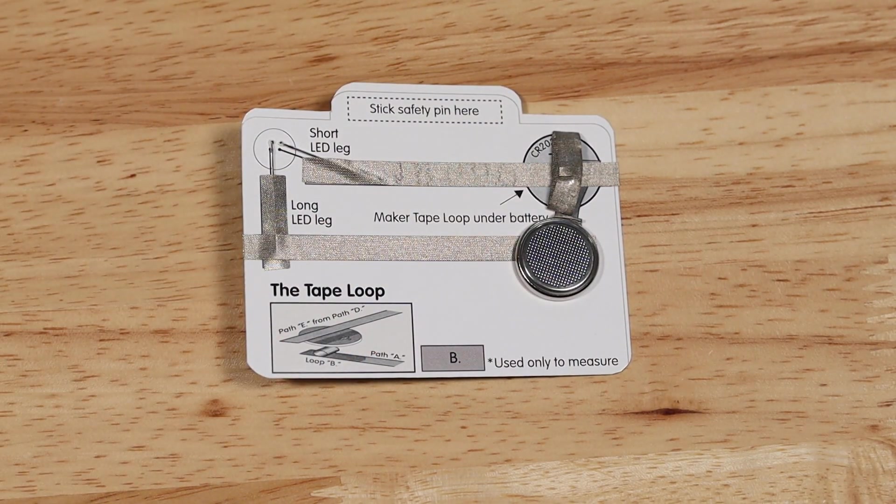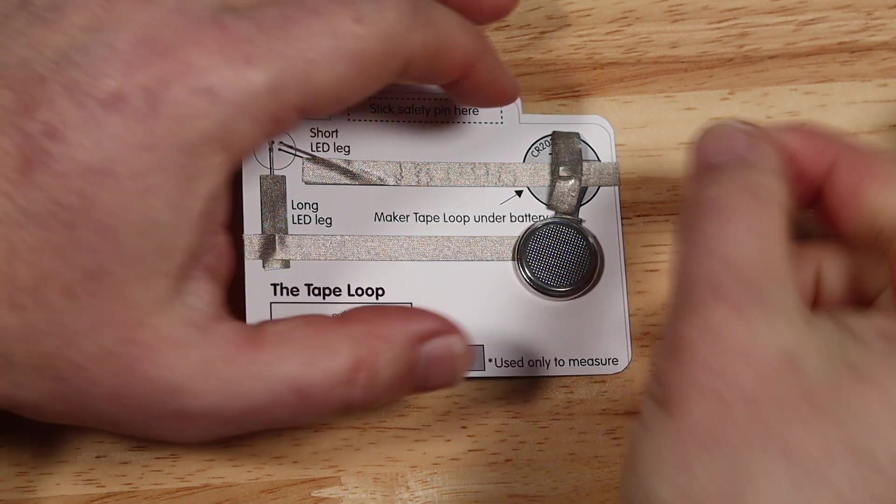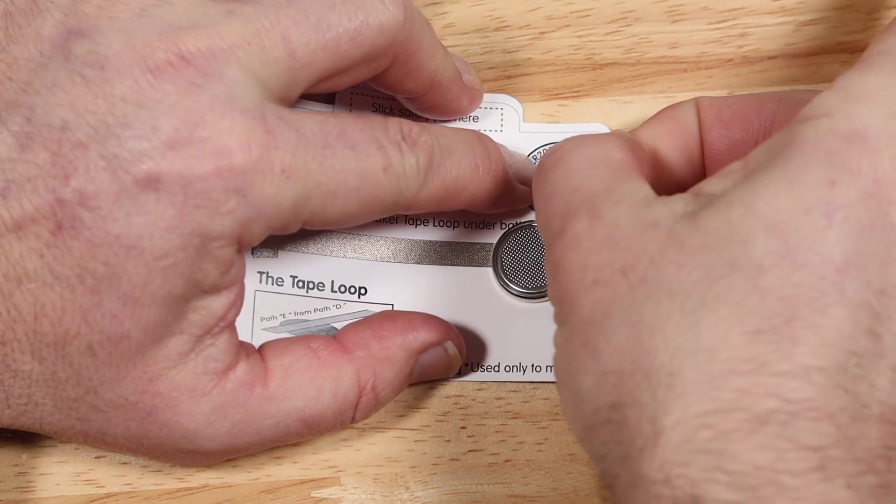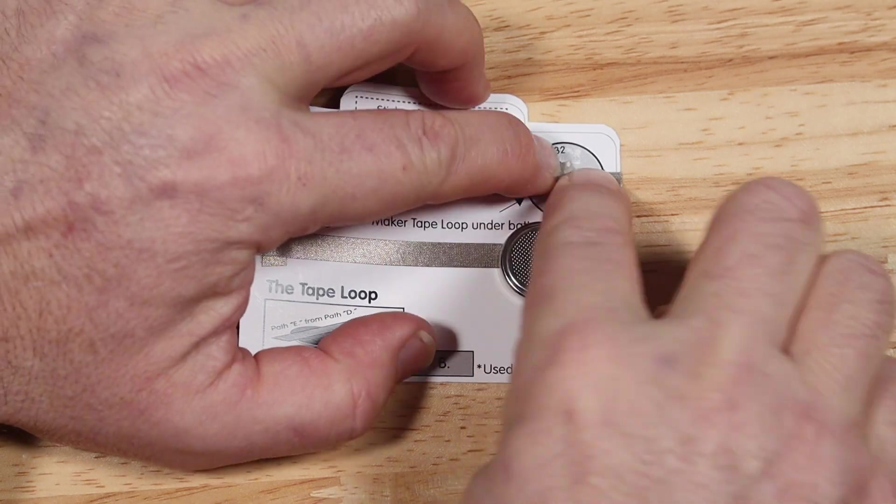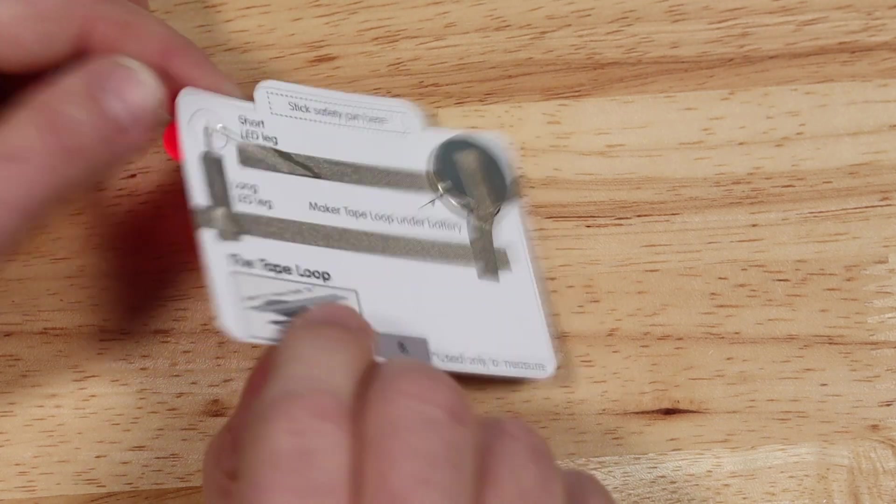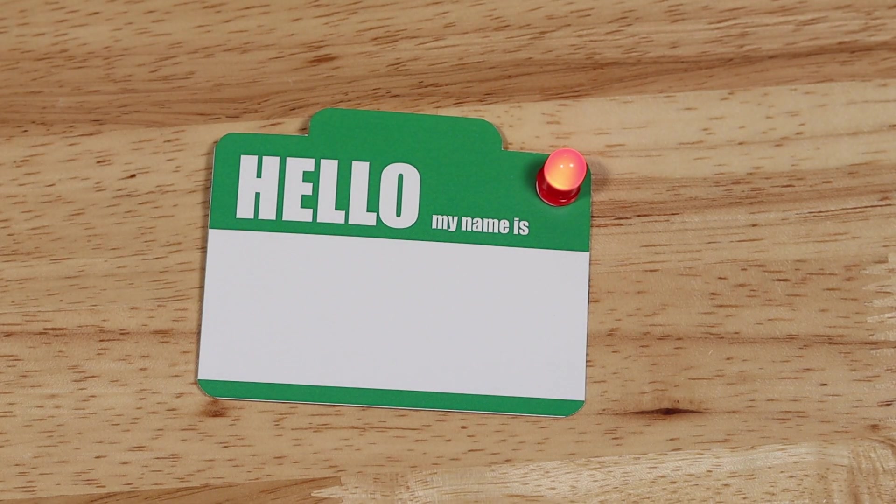So to fix this, what we'll do is make a new smaller loop of maker tape. We'll remove that large loop of tape, and replace it with a smaller one, and then flip the battery back up into place, completing the circuit. And now, of course, the LED will come on.